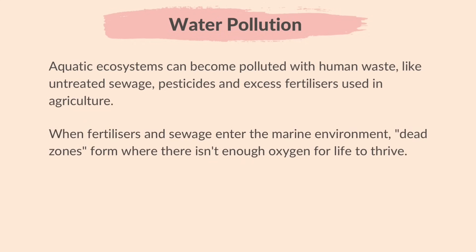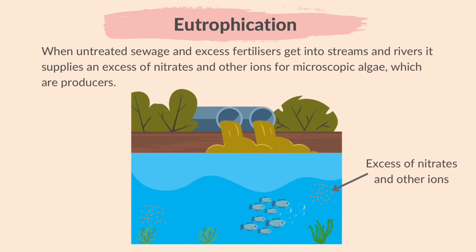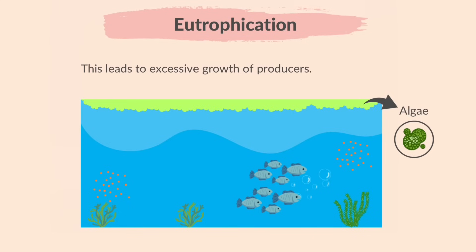When fertilizers and sewage enter the marine environment, dead zones form where there isn't enough oxygen for life to thrive. This is called eutrophication. When untreated sewage and excess fertilizers get into the streams and rivers, it supplies an excess of nitrates and other ions for microscopic algae, which are producers. This leads to the excessive growth of producers due to the nutrient overload.